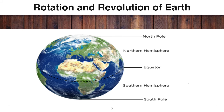We have studied in the previous class that the Earth has an imaginary line running through its center, passing through the center, and this line is called its axis. The axis of the Earth is slightly tilted. The two opposite points on the Earth's surface through which its axis passes are known as poles — North Pole and South Pole.